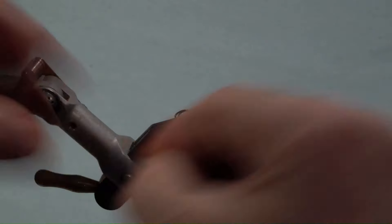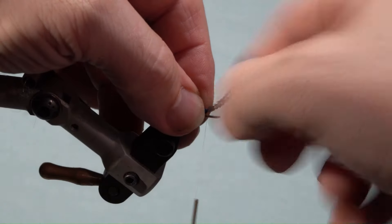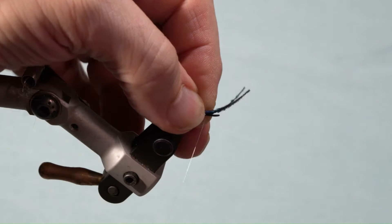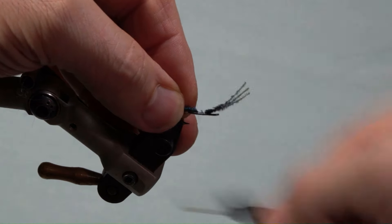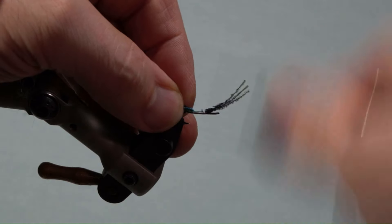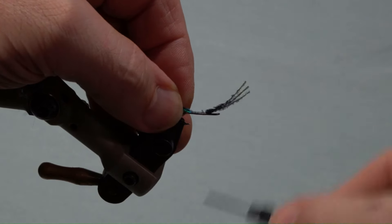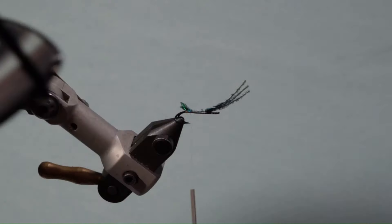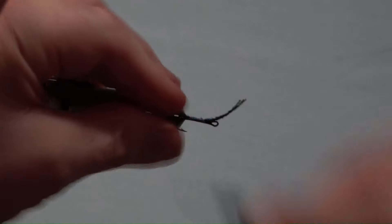Next, take three strands of peacock sword, measure the tips so they are even and set it on top of the hook. The tips should be even with the bend of the hook. Secure with edge-to-edge wraps to the base of the tag and wrap it forward to the start.